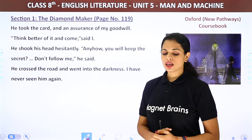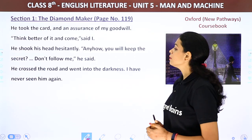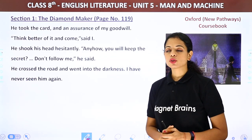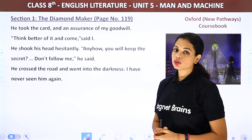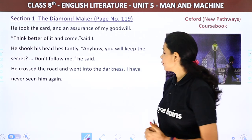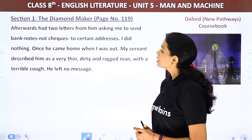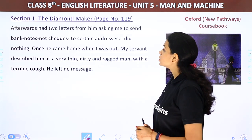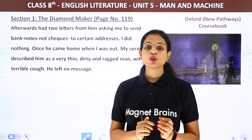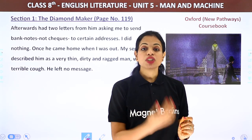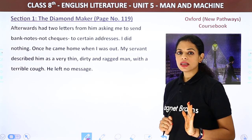'Now you will keep the secret. Don't follow me.' He crossed the road and went into the darkness. The narrator never saw him again. Afterwards he had two letters from the stranger asking him to send bank notes — not checks — to certain addresses. But the narrator did nothing, reasoning he could not send hundreds of pounds to someone he had met only once.